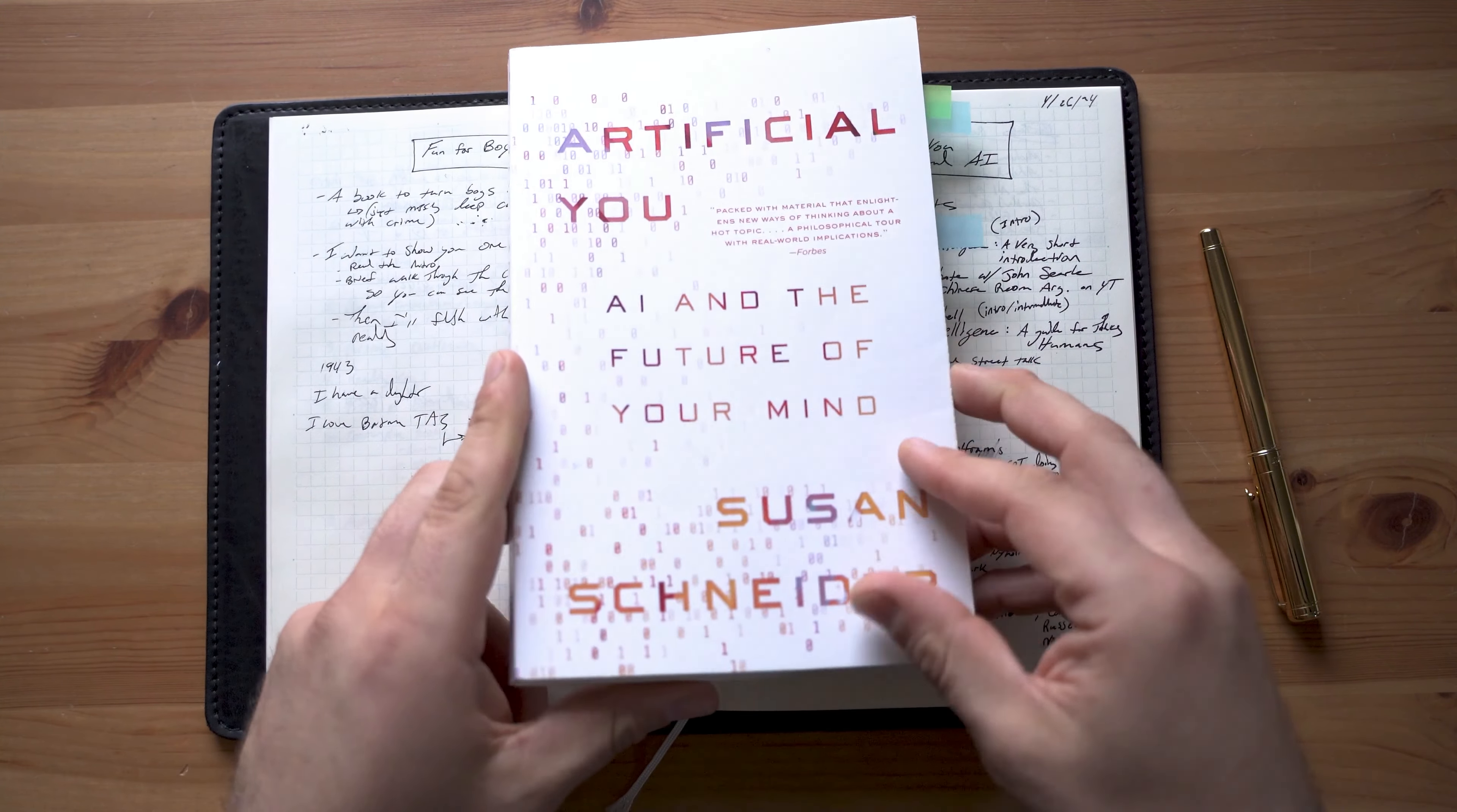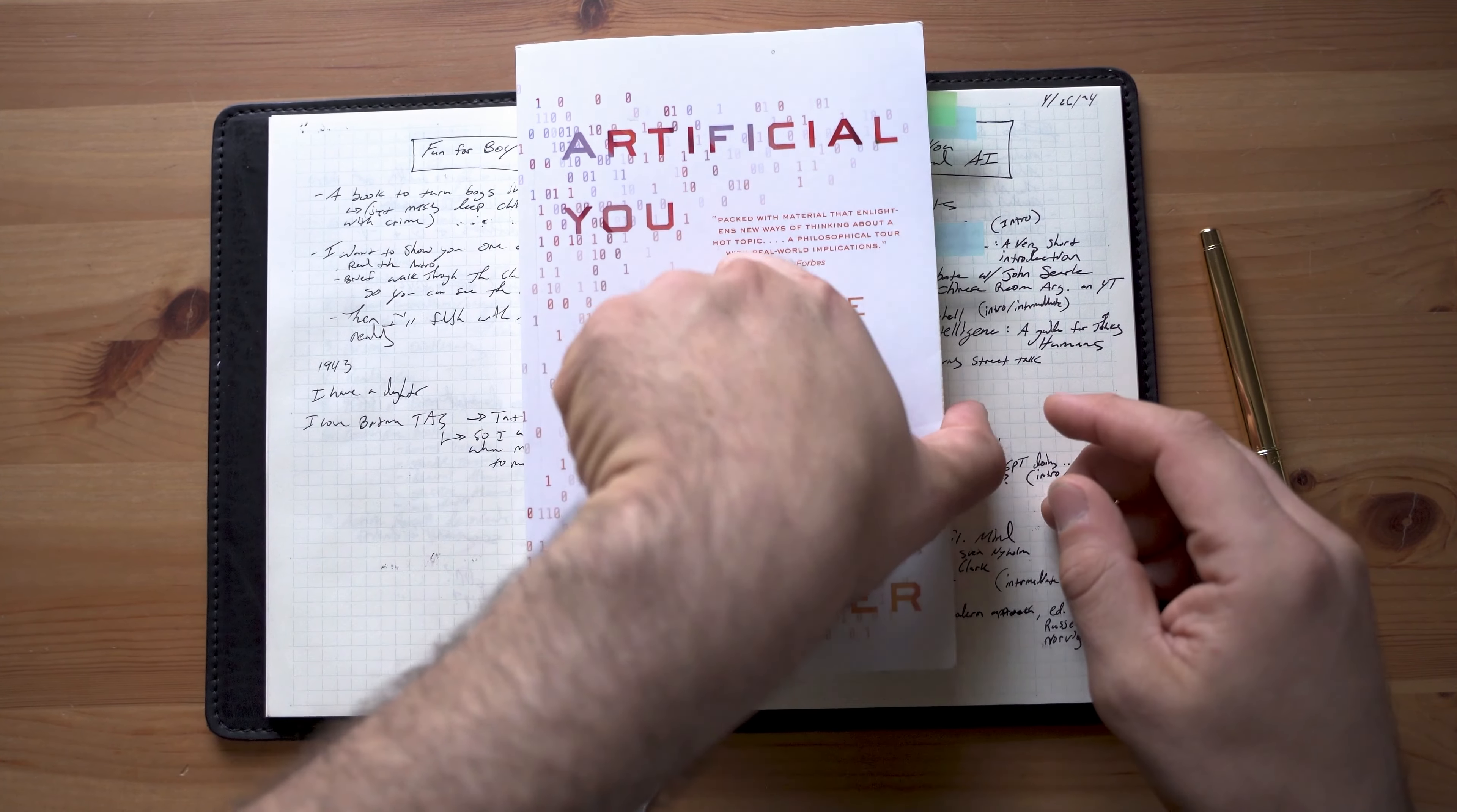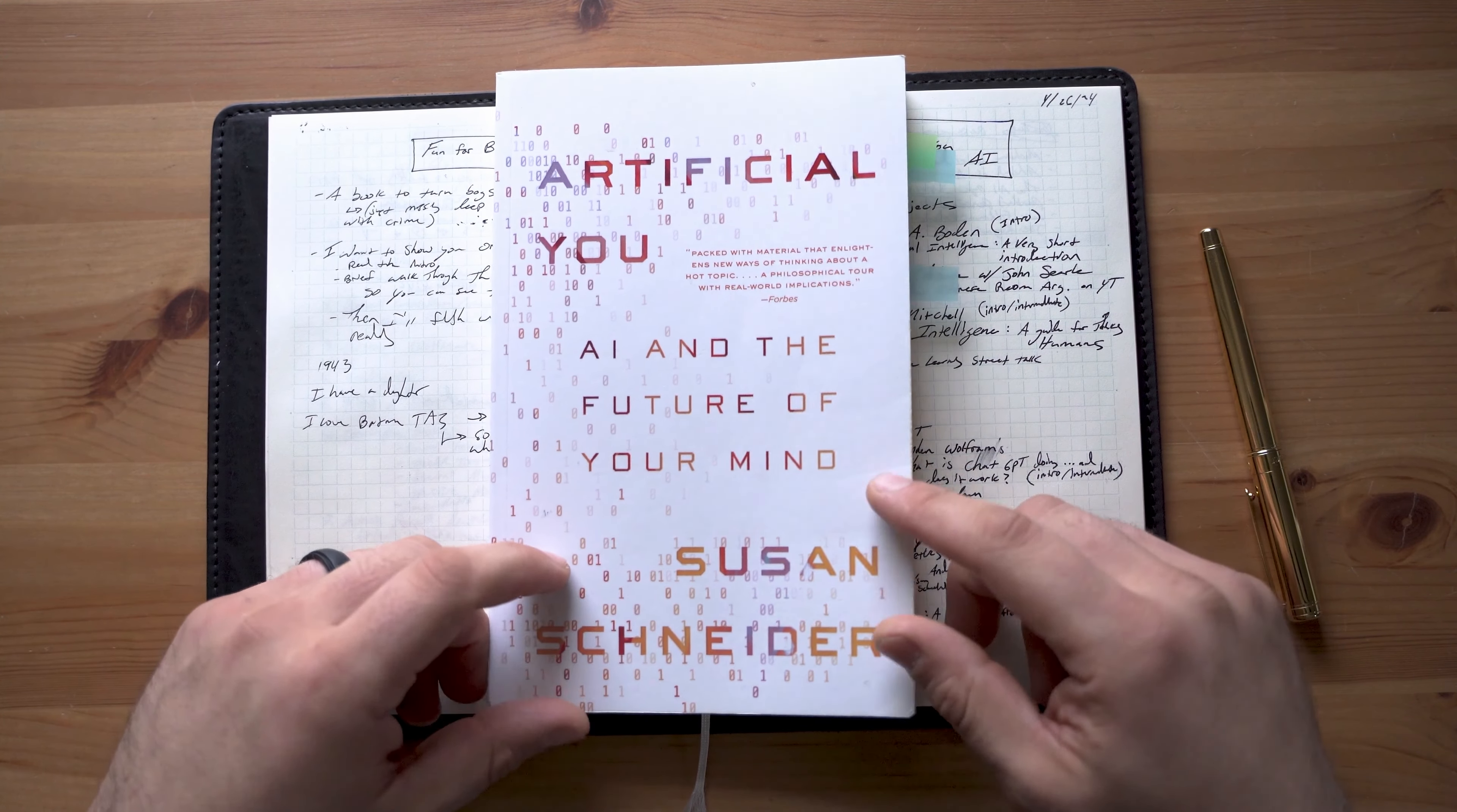Next up, we got some philosophy of artificial intelligence stuff. Artificial You, AI and the Future of Your Mind by Susan Schneider. She's a friend. I love Susan. She's the best. She's a first-rate philosopher of mind. This book's really helpful for introducing you to a lot of the puzzles in the philosophy of artificial intelligence and personal identity.